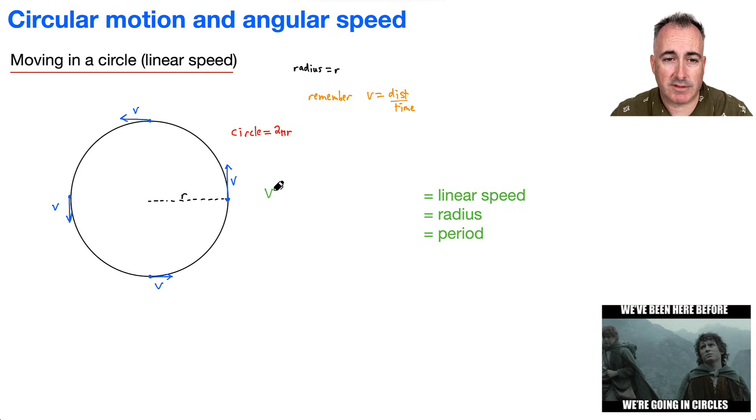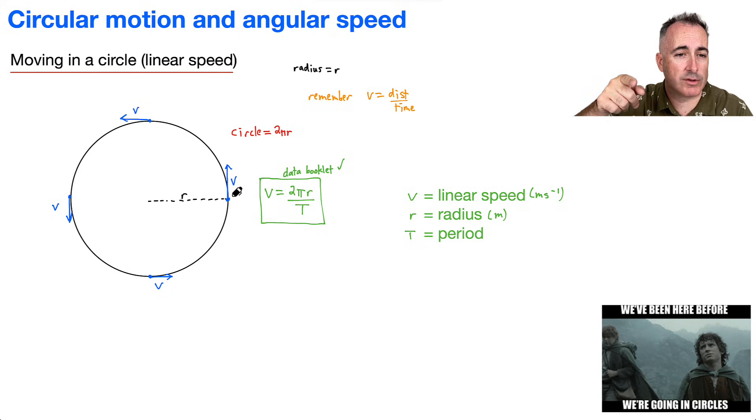It says the linear speed, which is V equals 2 pi r over capital T, where capital T is called the period. So just to reiterate, V is the linear speed, that's in meters per second, so nothing weird about that one. R is the radius, that's measured in meters. And T is the period.